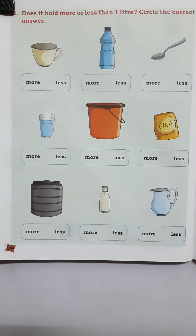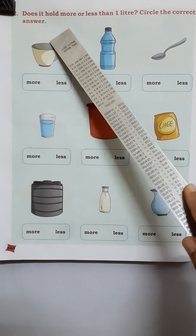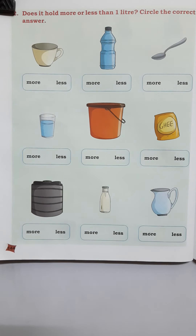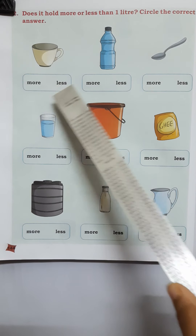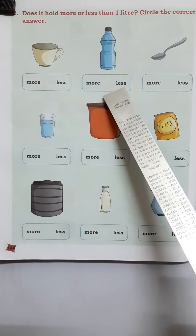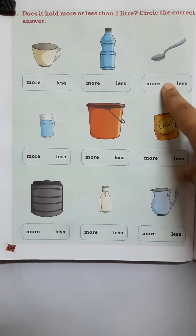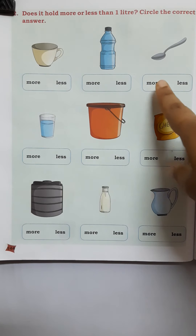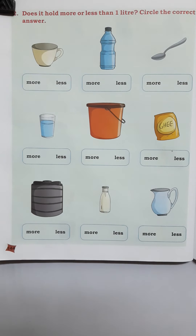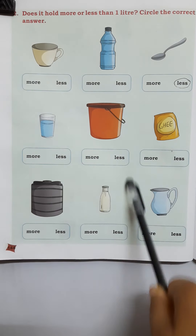Open your book to page 144 for reference. Here you see: does it hold more or less than 1 liter? Circle the correct answer. This cup — does it hold more or less than 1 liter? Circle the correct option. This bottle — more or less than 1 liter? Circle the correct option. This spoon — does it hold more or less than 1 liter? It is obviously less than 1 liter, so we circle that one. You have to complete this exercise on your own.